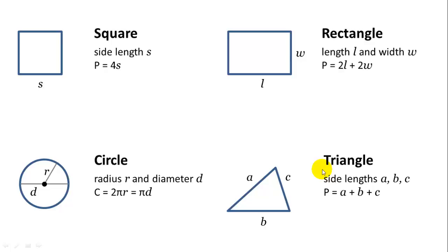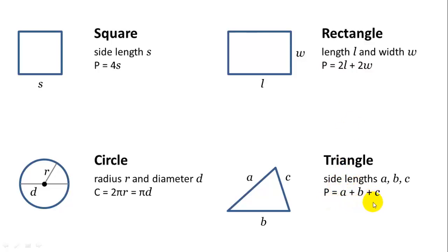To summarize what we've covered so far: a square with side length S has perimeter 4S. A rectangle with length L and width W has perimeter 2L plus 2W. A triangle with side lengths A, B, and C has perimeter A plus B plus C. And a circle with radius R and diameter D has circumference 2πr or πD — both are equivalent.